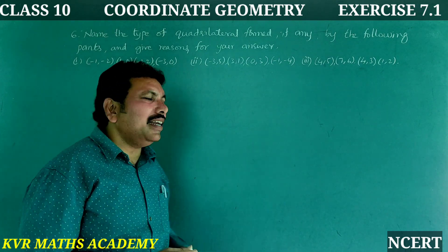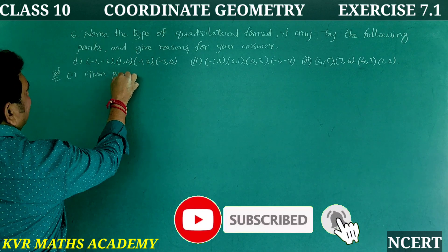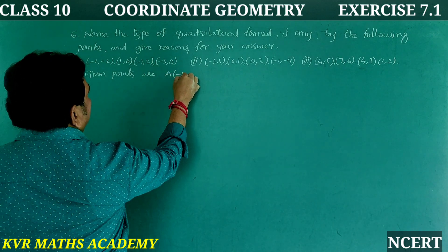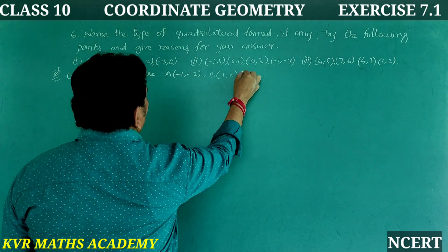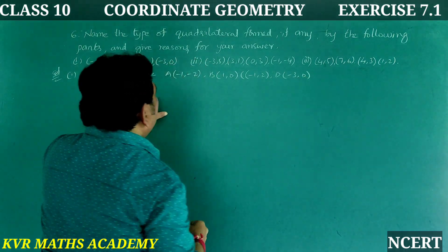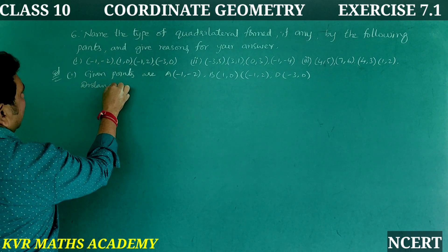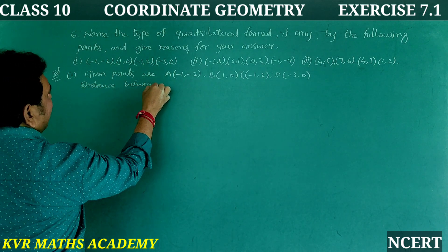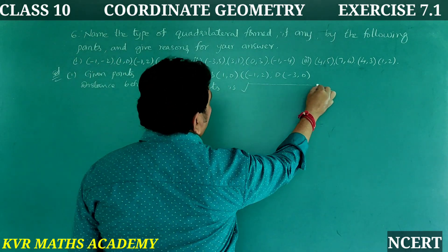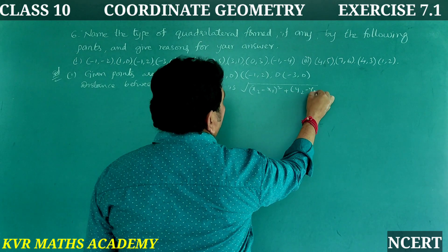Let's do them one by one. Solution. First one. Given points are A(-1, -2), B(1, 0), C(-1, 2), and D(-3, 0). The distance between two points x1, y1 and x2, y2 is given by the formula: root of (x2 minus x1) whole square plus (y2 minus y1) whole square.